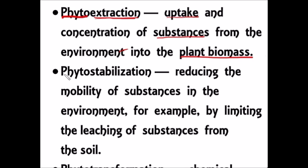The next mechanism is phytostabilization. Stabilization means stopping the movement of pollutants from one place to another due to leaching. Pollutants washed by water can reach another environment and pollute it. Phytostabilization reduces the mobility of substances in the environment by limiting the leaching of substances from the soil. These plants help limit the leaching of pollutants.